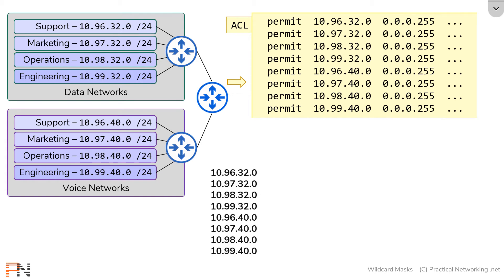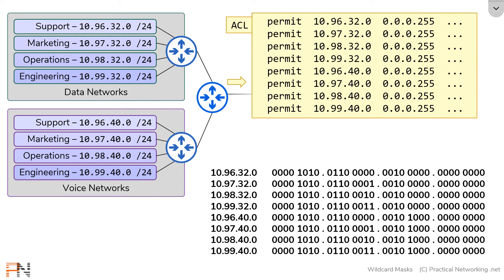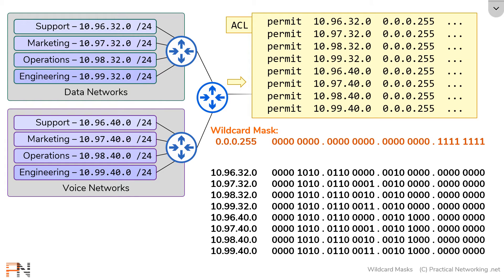So let's take a look at those network IDs and write them out in binary, and let's also do the same for the wildcard mask. Recall that a wildcard mask is looking for a match wherever there's a zero. So in our example, we are looking for a match along those bits, and we are not looking for a match in the remaining bits.